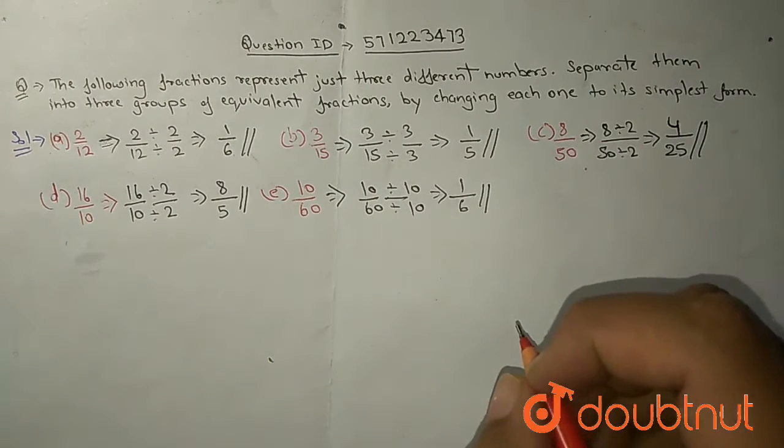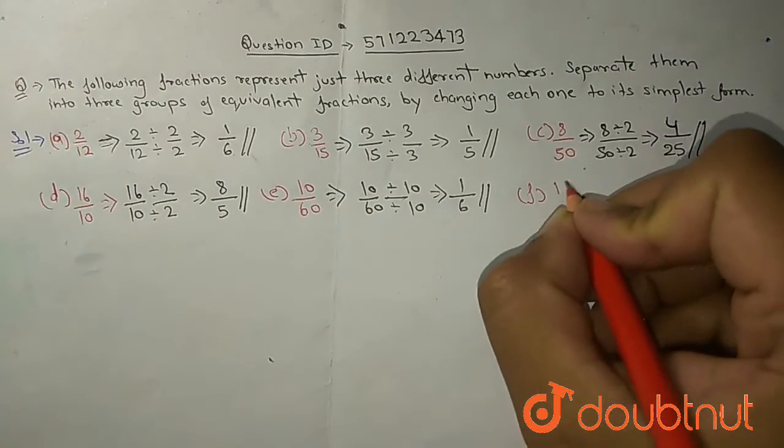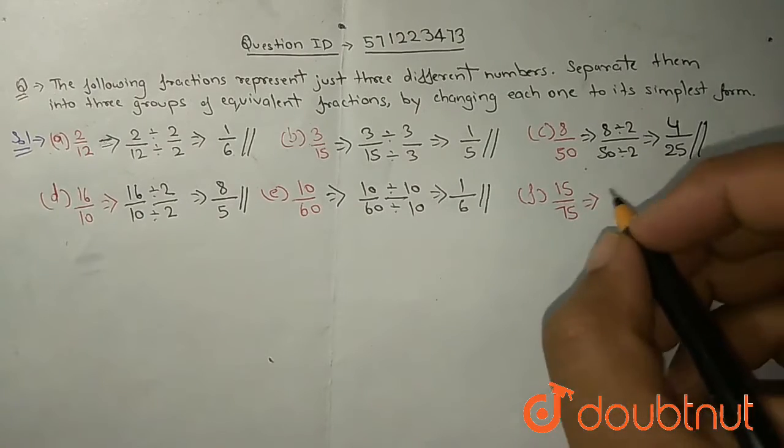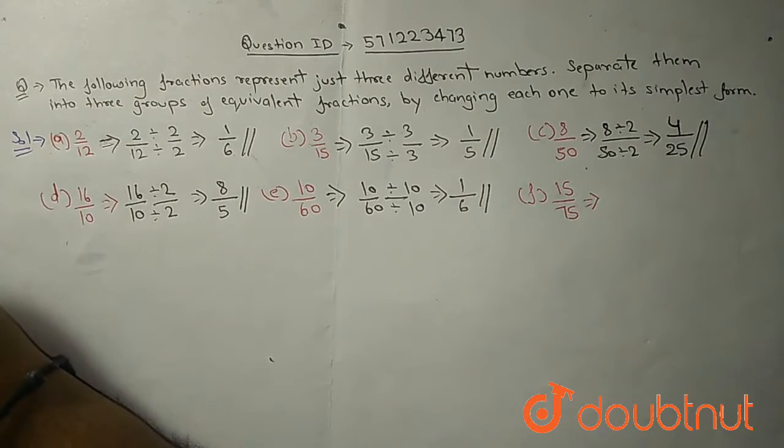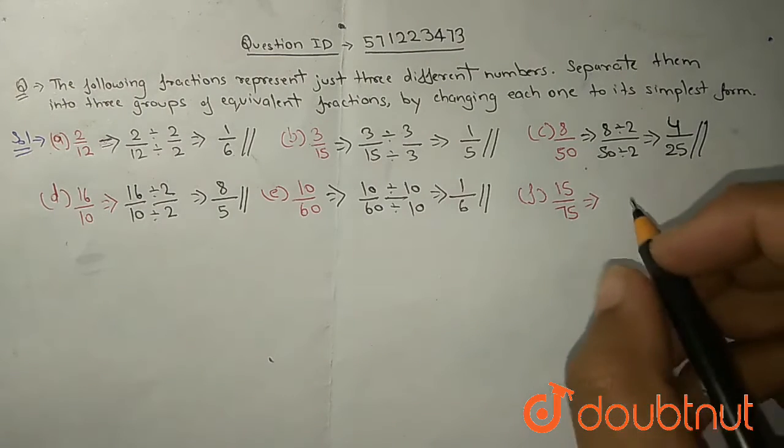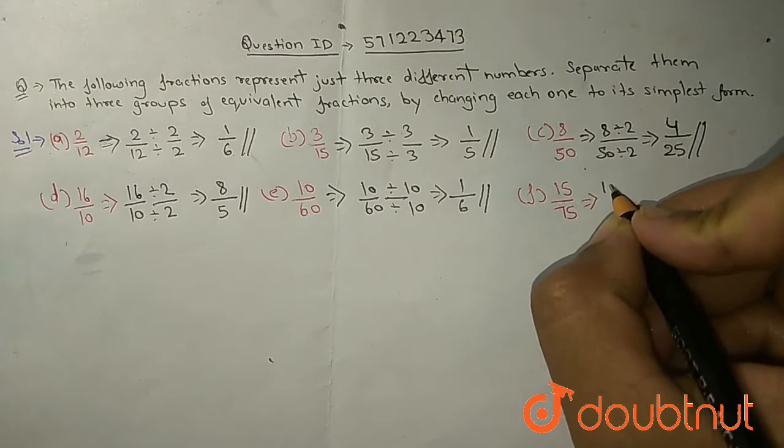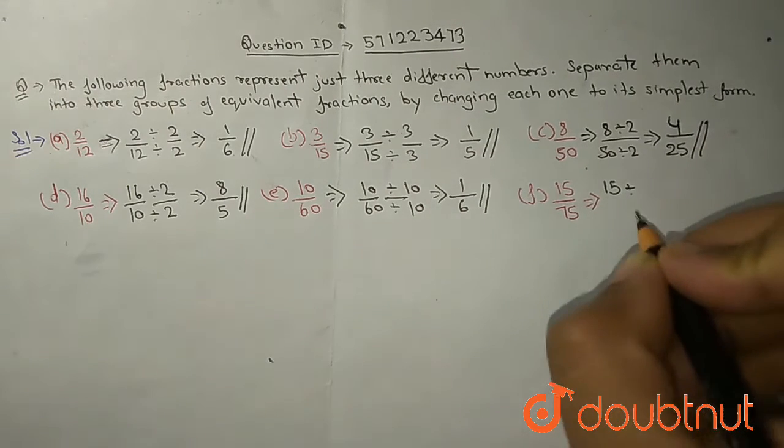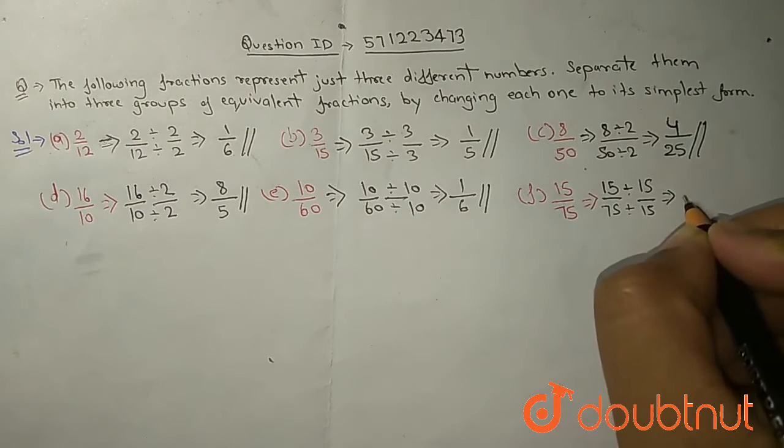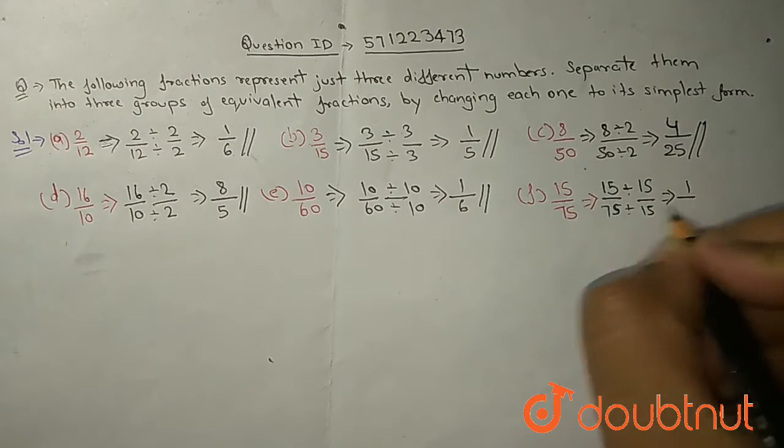Now moving to F part. F is 15 upon 75. If you divide 15 upon 75, check the table of 15. Does 75 come in 15 table? Yes. At how many times? 15 times 5 is 75. So 75 is divided by 15 and 15 is divided by 15. 15 divided by 15 will become 1 upon 5.